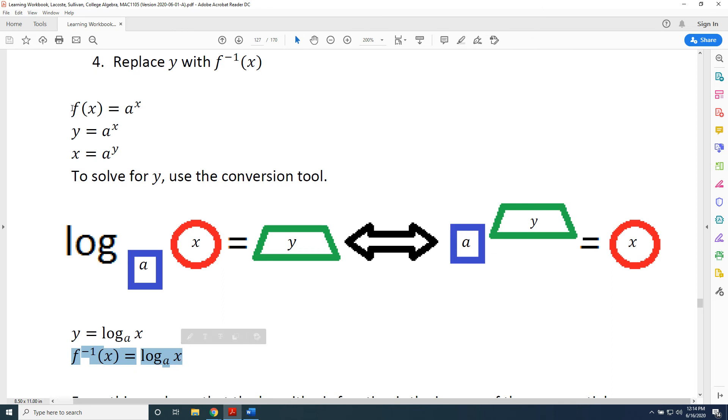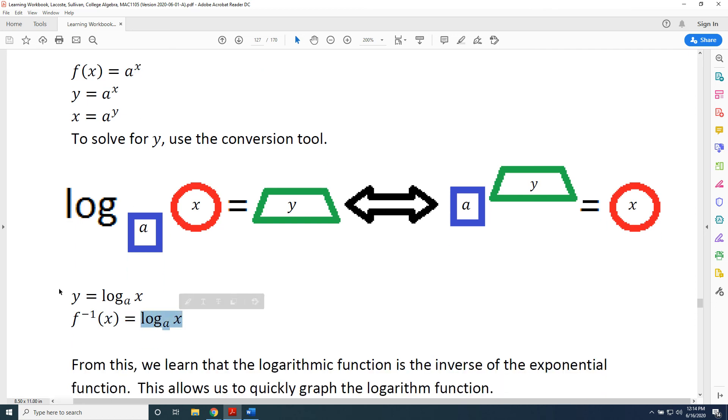This shows that when the original function is f(x) = a^x, its inverse is f^(-1)(x) = log base a of x. The exponential function and the logarithmic function are inverses of each other.